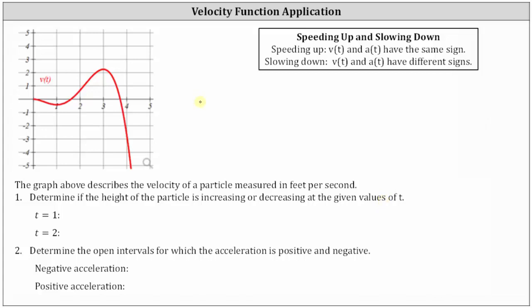Remember the velocity function is equal to the derivative of the position function, and therefore the sign of the velocity function indicates whether the position function, or in our case the height function, is increasing or decreasing. Which means to determine if the height of the particle is increasing or decreasing at the given values of t, we need to determine the sign of the velocity function at t equals one and t equals two.